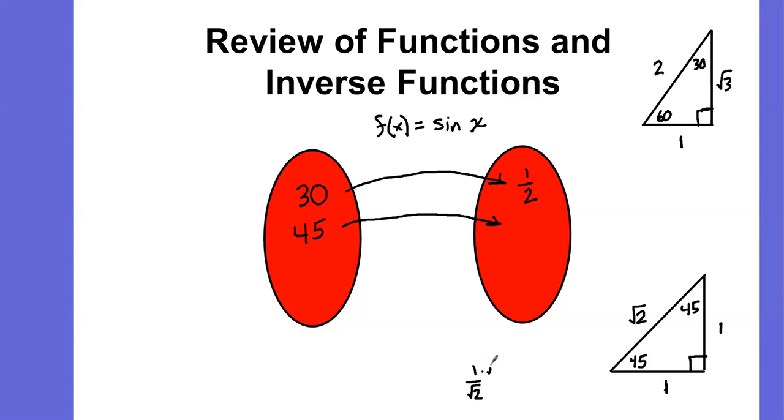I don't like having that radical in the denominator, so let's rationalize this. This would be root 2 over root 4. The square root of 4 is 2. So the sine of 45 would be root 2 over 2.